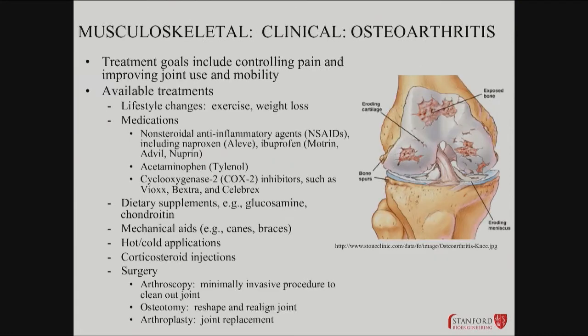So how would you treat that? Well, there are behavioral things you can do. You control pain with anti-inflammatories. You can improve strategies for joint use — identify where the pain's coming from in a patient and devise actions or behavioral patterns that allow them to avoid encountering that issue. That can be very effective. Exercise and weight loss help a lot — reducing the loads that the joints bear.